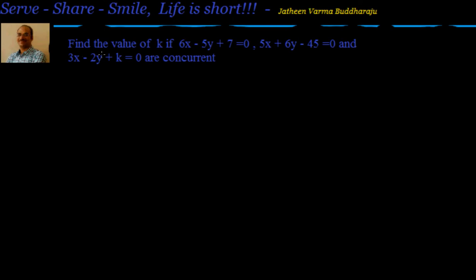So it's a very simple problem — I have taken a simple problem just to make sure that we go through all the approaches and we have enough time to do that. Find the value of k if 6x minus 5y plus 7 equal to 0, 5x plus 6y minus 45 equal to 0, and 3x minus 2y plus k equal to 0 are concurrent. So it's already given to us that these three lines are concurrent; we have to find out the value of k.